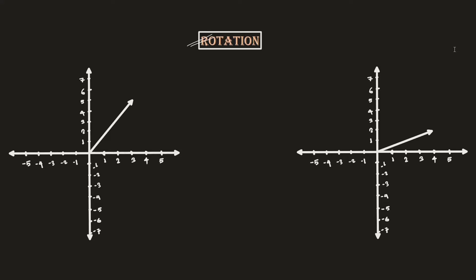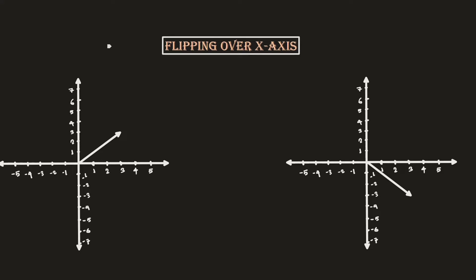Next is rotation. A vector pointing to a certain coordinate can be multiplied by a matrix so that it rotates and changes direction. Another kind of transformation is flipping the vector over the x-axis. A vector at three points on the x-axis and three on the y-axis, when flipped over the x-axis, becomes three points on the x-axis but minus three on the y-axis.